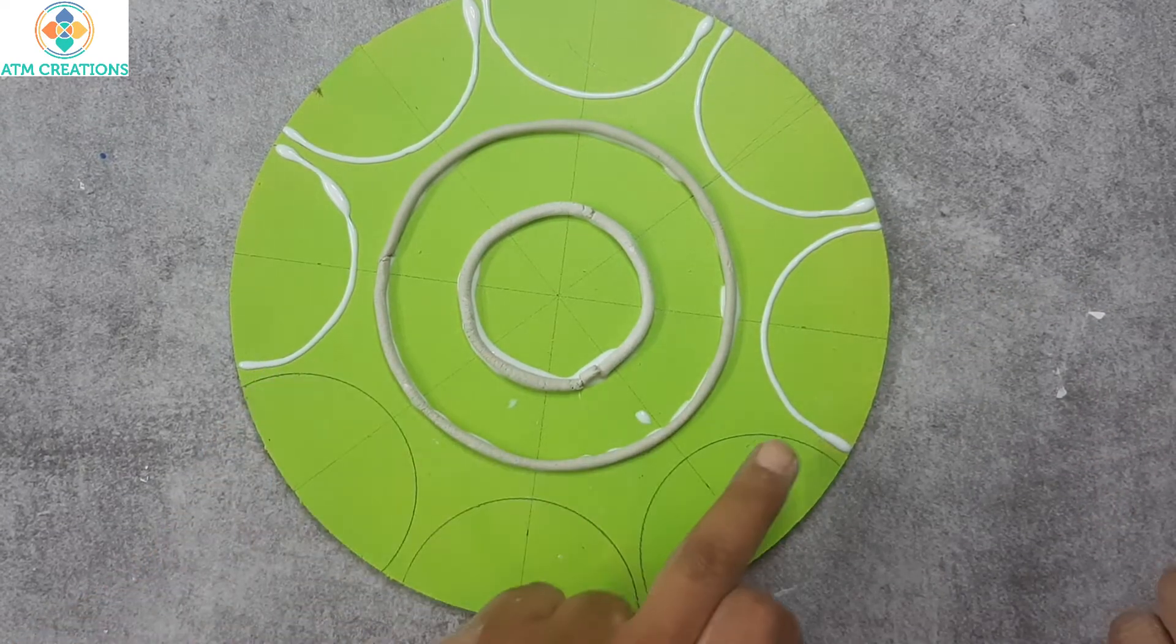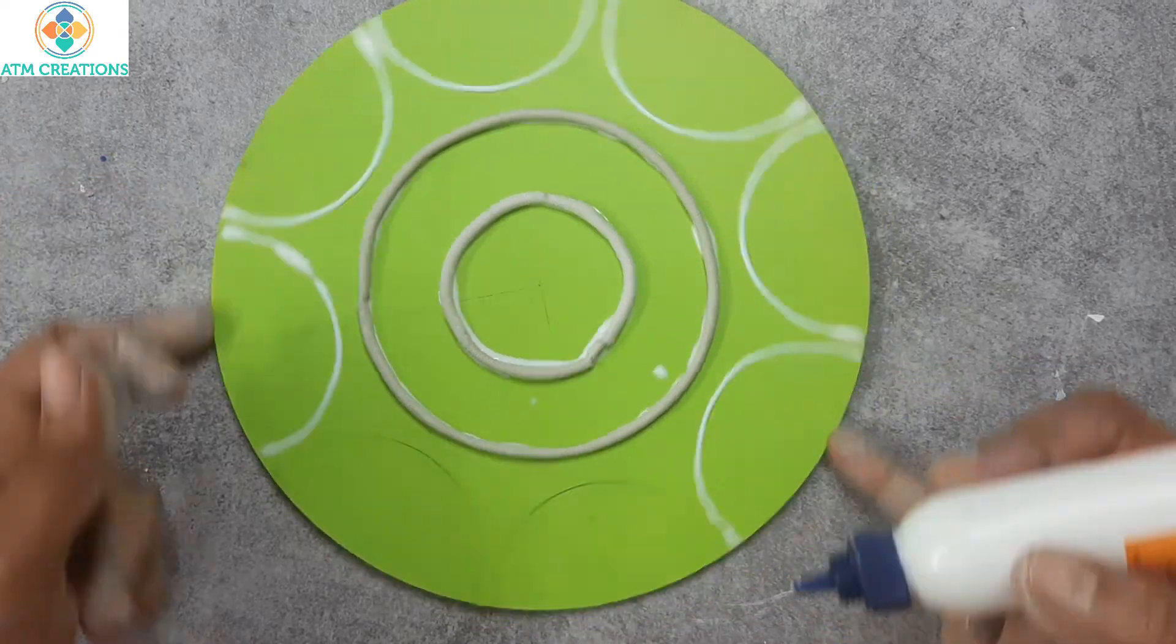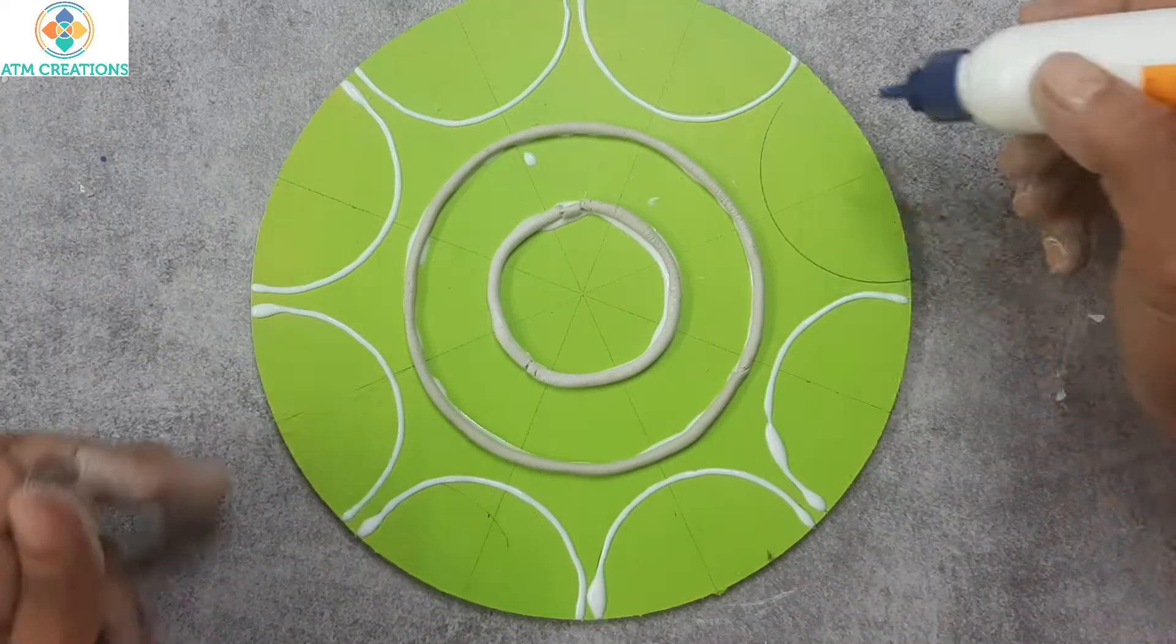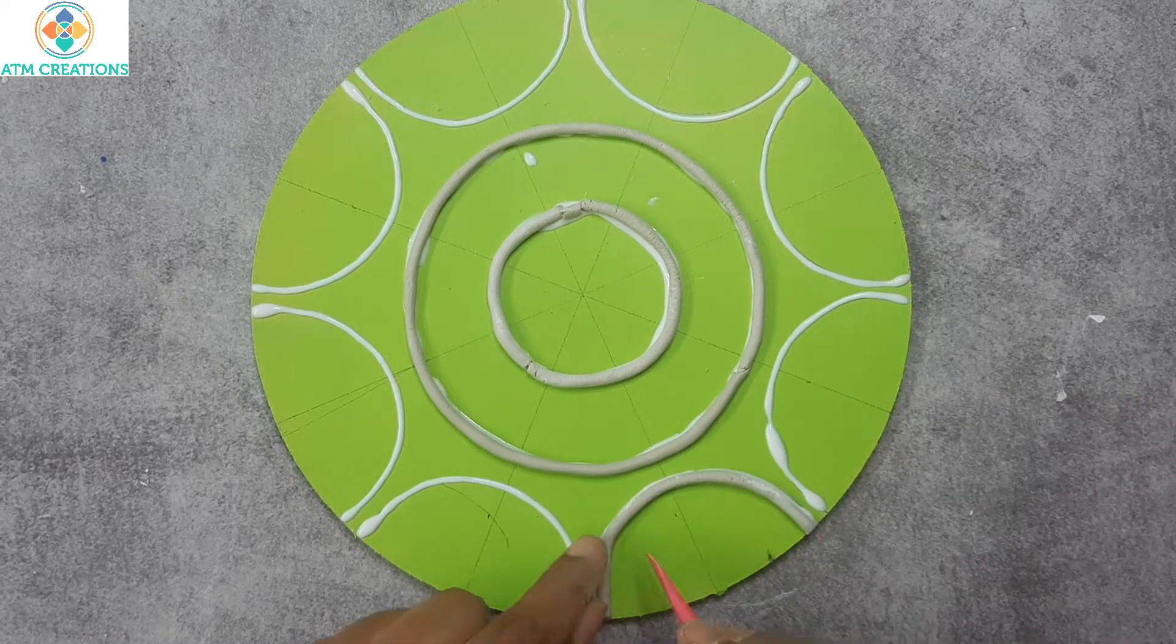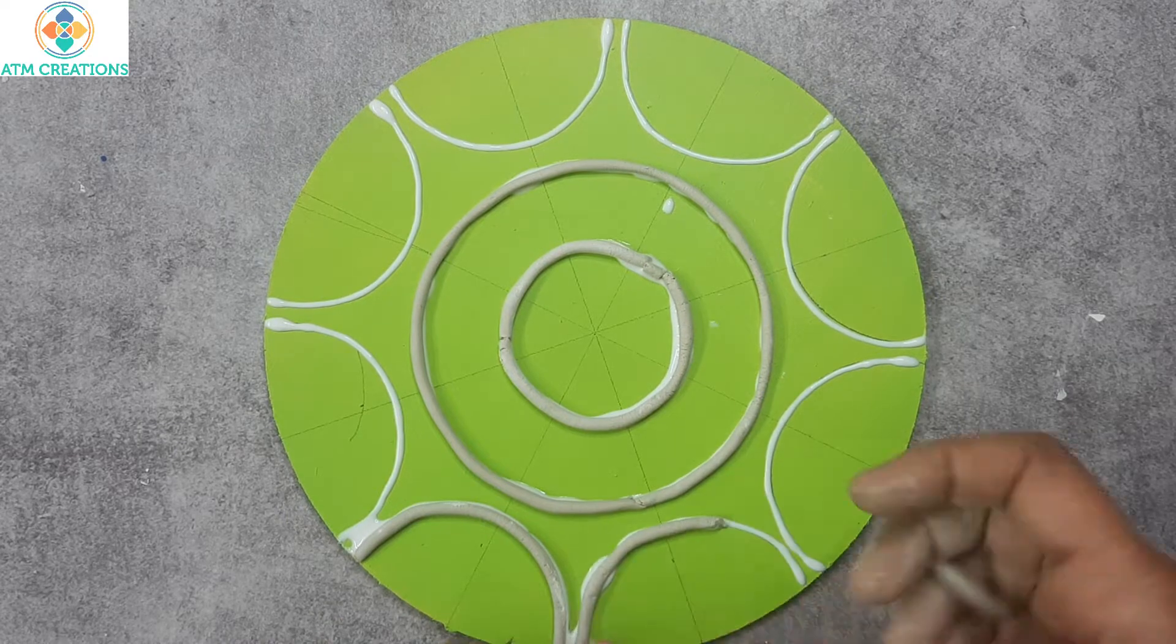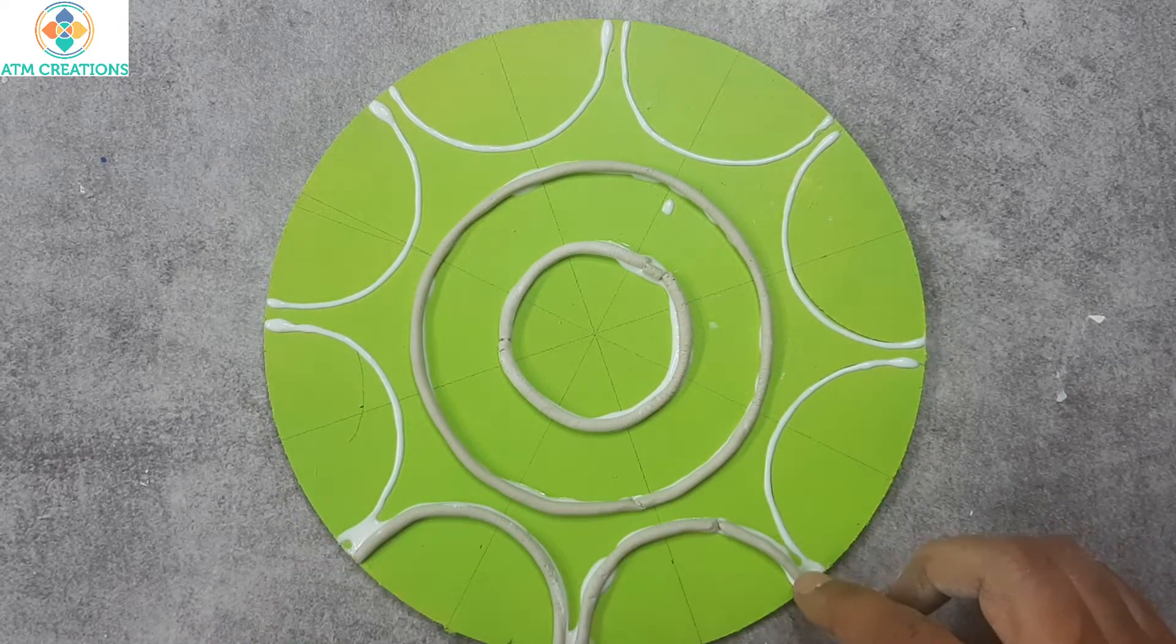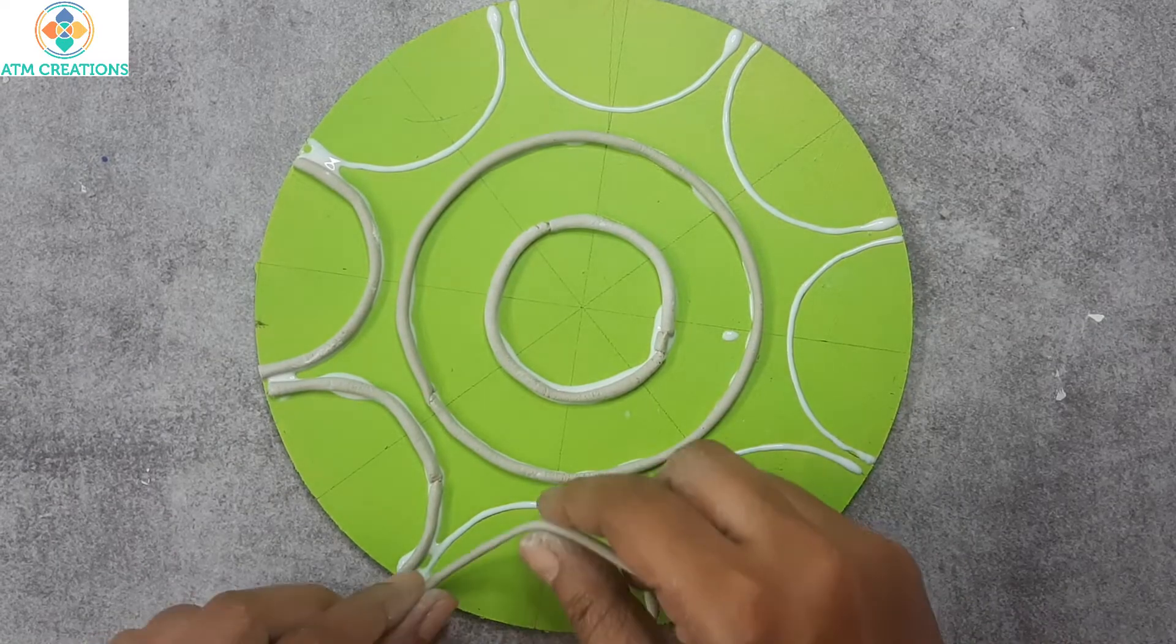Now I'll place the Febicol and clay for these half circles here. I'll place the clay for the first half circle, then the next one. I'll place the clay for all the other half circles now.